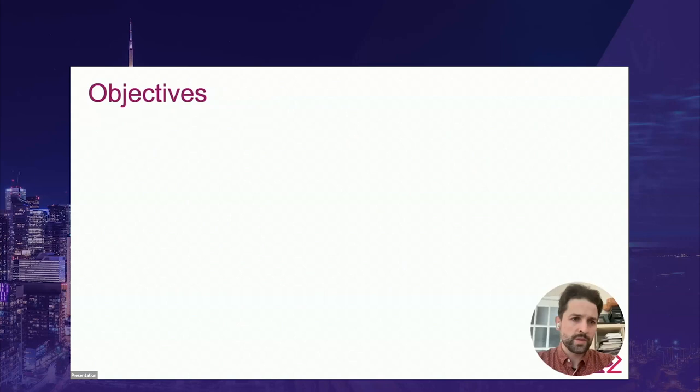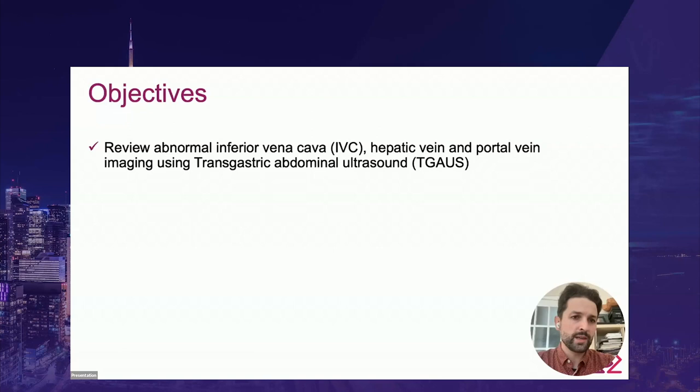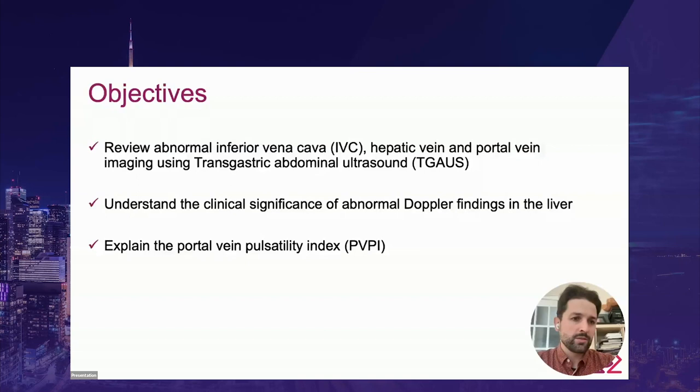The main objectives of this talk will be to review abnormal IVC, hepatic vein, and portal vein imaging using transgastric abdominal ultrasound; to understand the clinical significance of abnormal Doppler findings in the liver; and to discuss the portal vein pulsatility index.